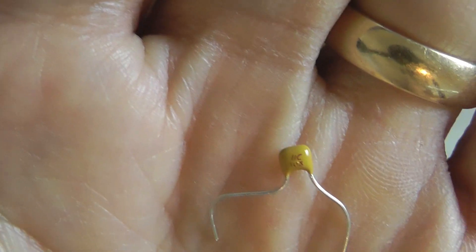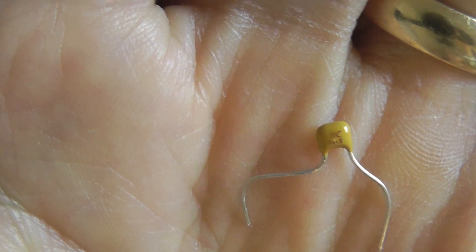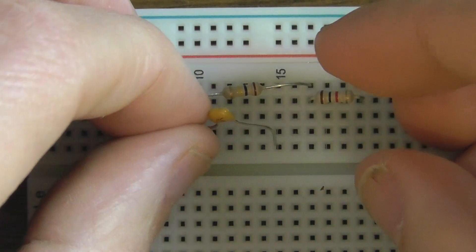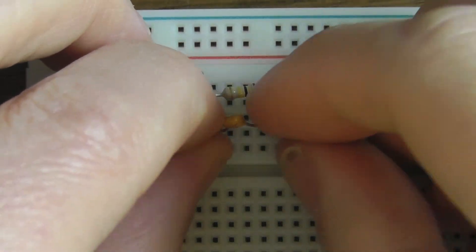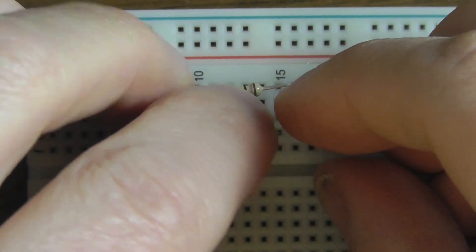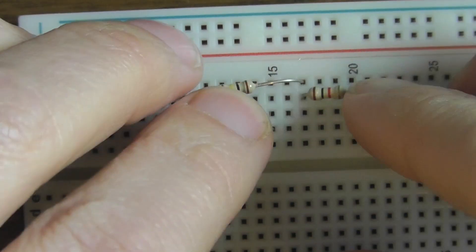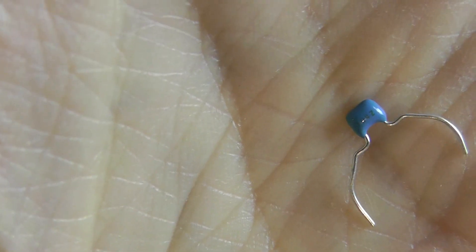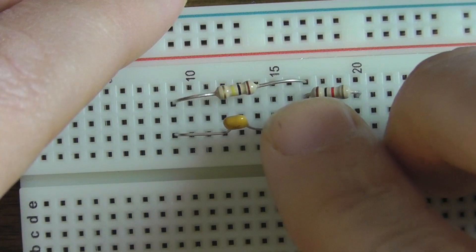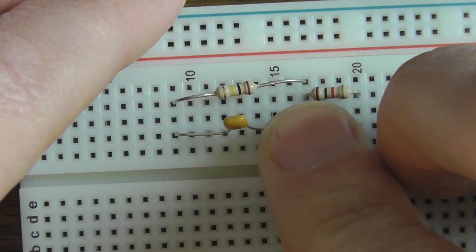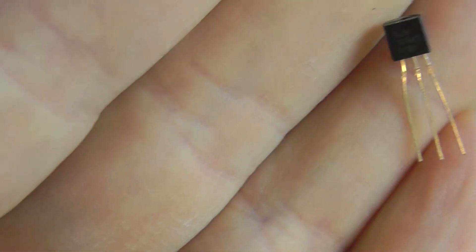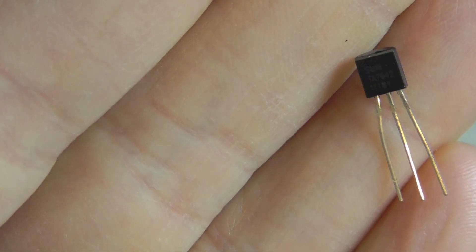I'll then add a 0.01 microfarad capacitor, which is marked with a 103, as you can see right there. And I'm going to put that in the G9 and G15 terminals in the breadboard. And I'll cover more on capacitors in a later tutorial. I'm then going to be adding two 0.1 microfarad capacitors, which are marked with a 104, which you might be able to see there if you squint really close. And the first one's going to go in the F15 and F17 terminals.